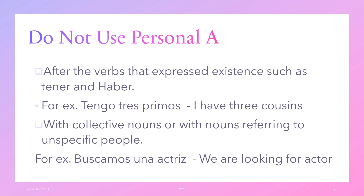We do not use the Personal A after verbs that express existence, such as tener and haber. For example, 'Tengo tres primos' — I have three cousins. We also do not use the Personal A with collective nouns or with nouns referring to unspecific people. For example, 'Buscamos una actriz' — We are looking for an actress. Remember, the Personal A is only used when referring to human beings — that is the reason we call it the Personal A.